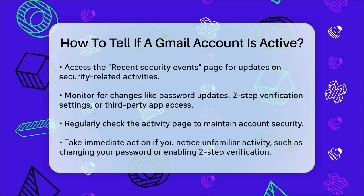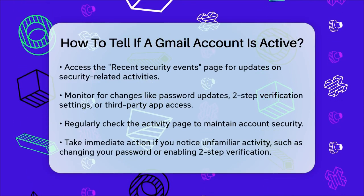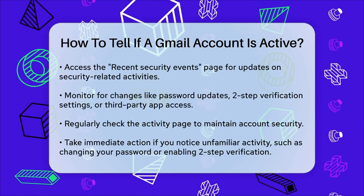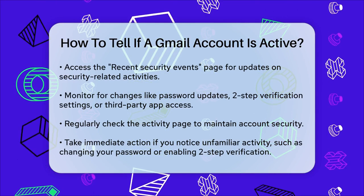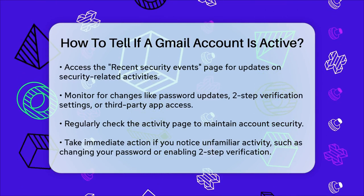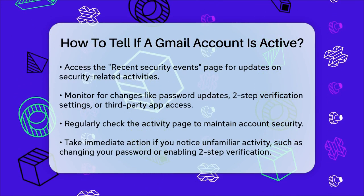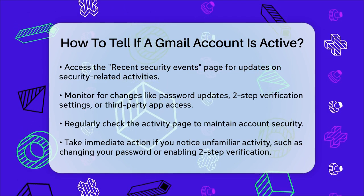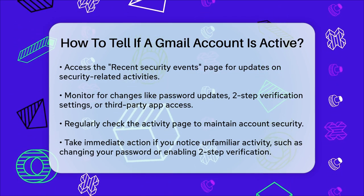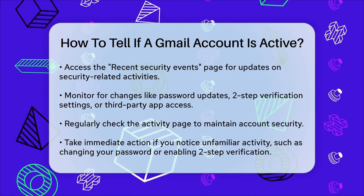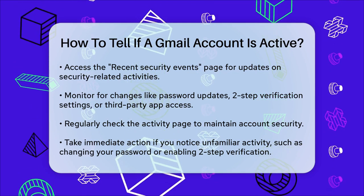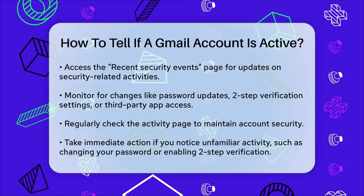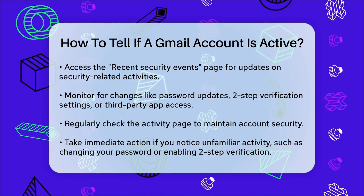If you notice any activity that you don't recognize, such as an unfamiliar IP address or device, you should take immediate action to secure your account. For instance, you can change your password, review and revoke any third-party app permissions, and enable two-step verification to add an extra layer of security. By regularly checking the Activity on this Account page, you can stay on top of your Gmail account's activity and ensure it remains secure and active only for your use.